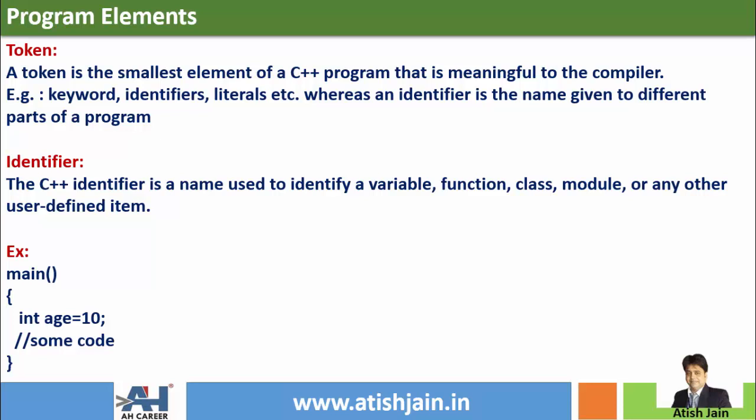A C++ identifier is a name given to different parts of a program — a name used to identify a variable, function, class, module, or any other user-defined item. Every component and every word in the program is a token. Tokens are identified by variable names, function names, which we know as identifiers.